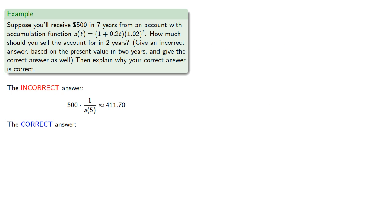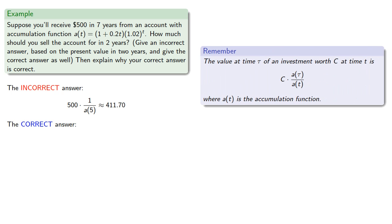So let's compute the actual value. So remember the value at time tau of an investment worth C at time t is C times this ratio, a(tau) over a(t), where a(t) is the accumulation function.